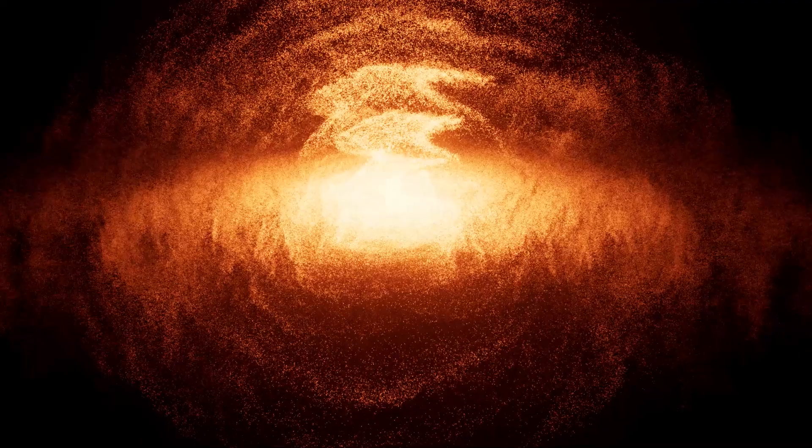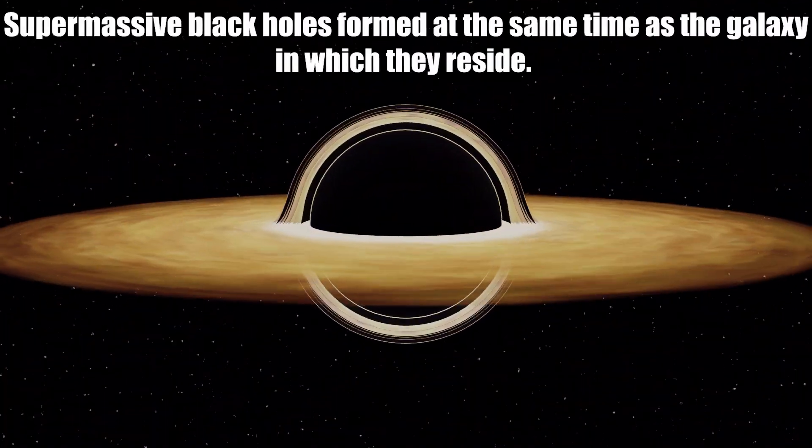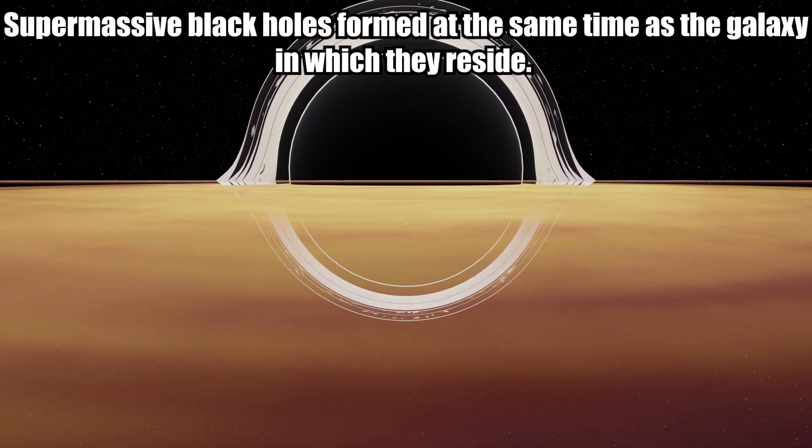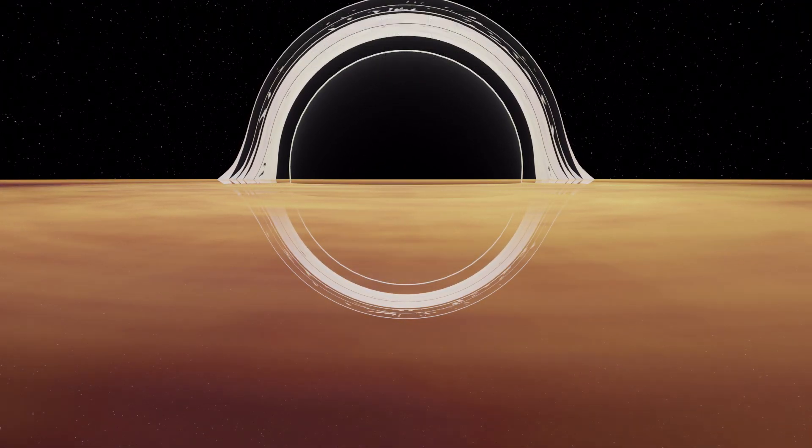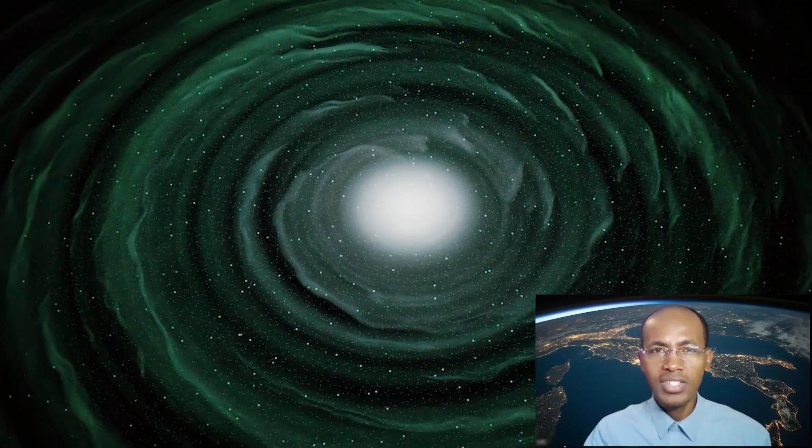Supermassive black holes form at the same time as the galaxy in which they reside. They are thought to have grown from seeds from the earliest massive stars. The size of the supermassive black hole is related to the size and mass of its host galaxy.